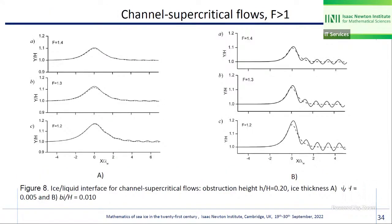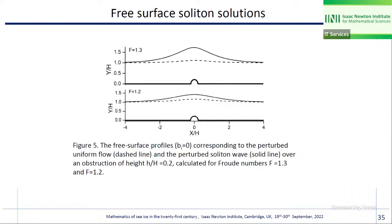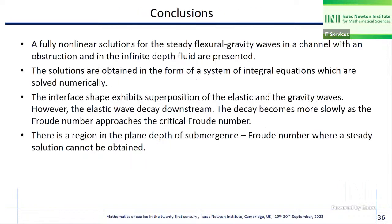For channel supercritical flow, only one root appears in the dispersion equation. For ice sheet thicknesses of 0.05 and 0.01, this resembles subcritical flow without an ice sheet. Without an ice sheet, this model provides two solutions, one of which is a soliton. In the case of the present ice sheet, we were not able to obtain a soliton-like solution — perhaps we will try to obtain these results in future.